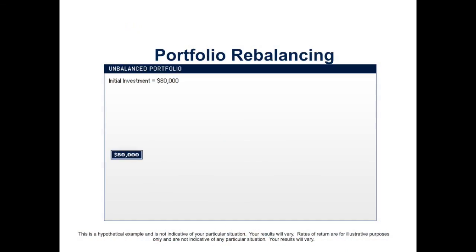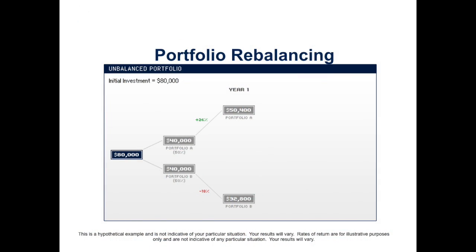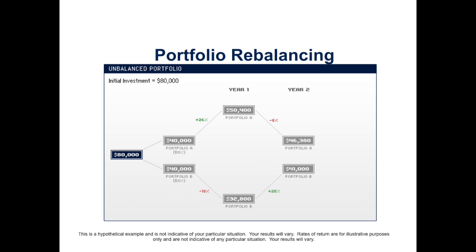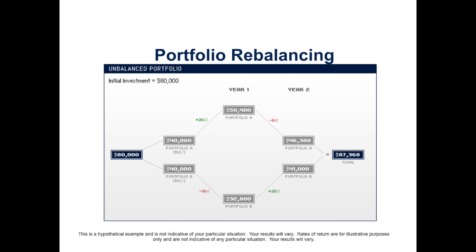So here's how it works. Let's say you have $80,000 to invest. To keep this simple, we'll just use two asset categories and split this $80,000 equally into each category. Now let's say after the first year, the first asset category goes up in value by 26%, and your second asset category goes down by 18%. Now let's say you do nothing to your portfolio at this time — you just leave it alone. And the second year, the first asset category goes down by 8%, and your second asset category goes up by 25%. At the end of the second year, your portfolio is worth over $87,000. So you think everything's okay because your account is up, right?